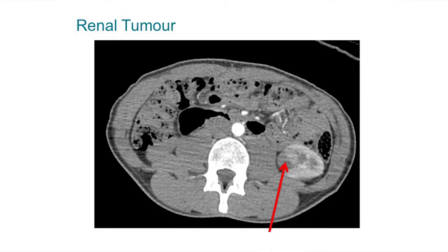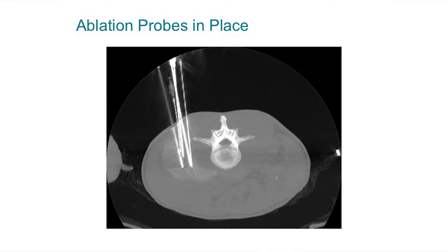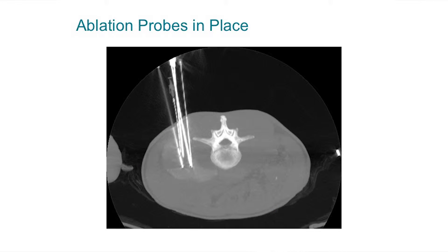The clinical problem that we'll be discussing is monitoring temperature during ablation of cancer. Increasingly, cancer is treated with focal therapies — rather than removing an entire organ, we'll just target the relevant lesion: a metastasis in the liver or a primary tumour in the prostate, for example.